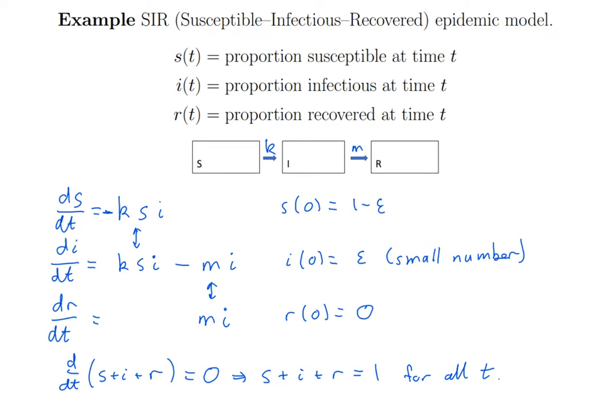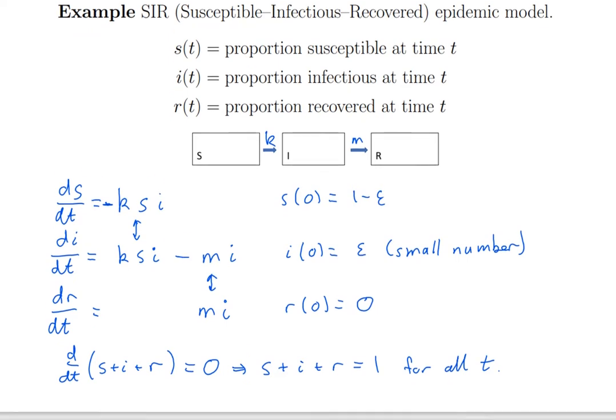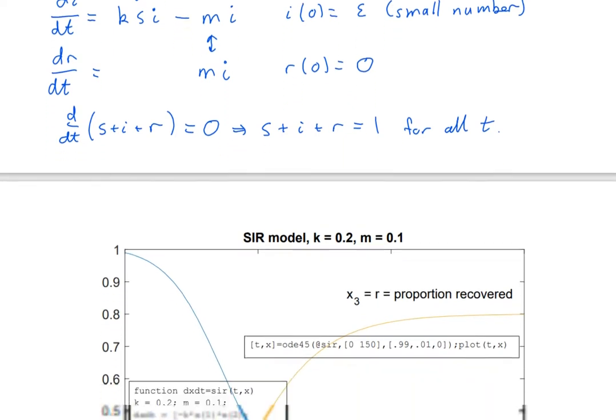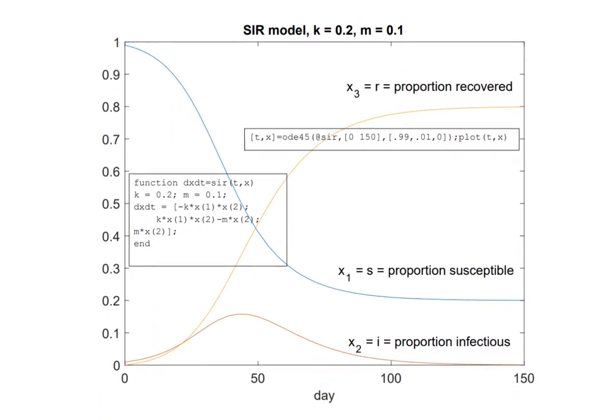Now there's a lot you could do with this model. You could study how the behaviour, how the spread of the epidemic varies depending on the two parameters there, k and m. So I just did a little example in MATLAB. I solve the equation numerically. Here is a little function that I saved into an m file called sir.m. That just gives the right-hand side of the differential equation and defines the parameters. And then I call that interactively by calling ODE45 to do a numerical solution of the differential equation.